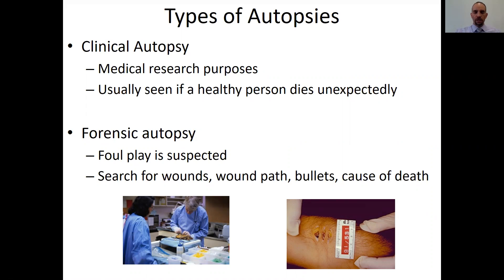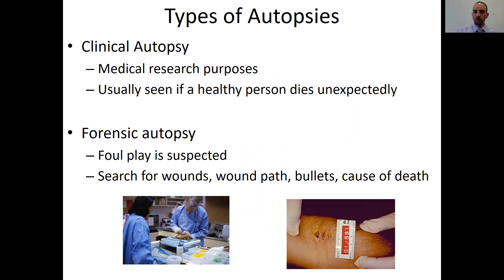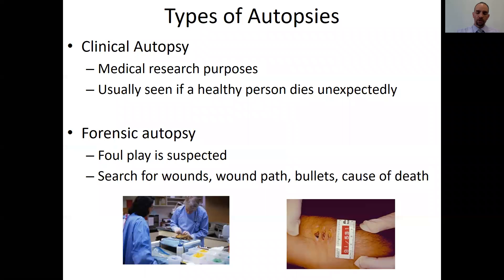A forensic autopsy is where foul play is suspected — we have bullet wounds, stab wounds, injuries, blunt force trauma — or we're trying to figure out whether it's a suicide or a homicide. They can look at bullet paths and direction, stab wounds, the size of the blade used, and whether it was serrated or not. We can gather a lot of information from an autopsy.